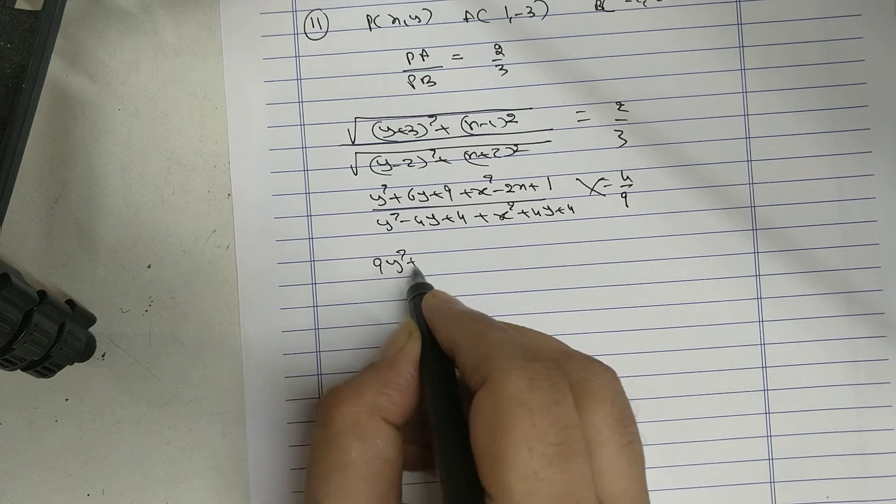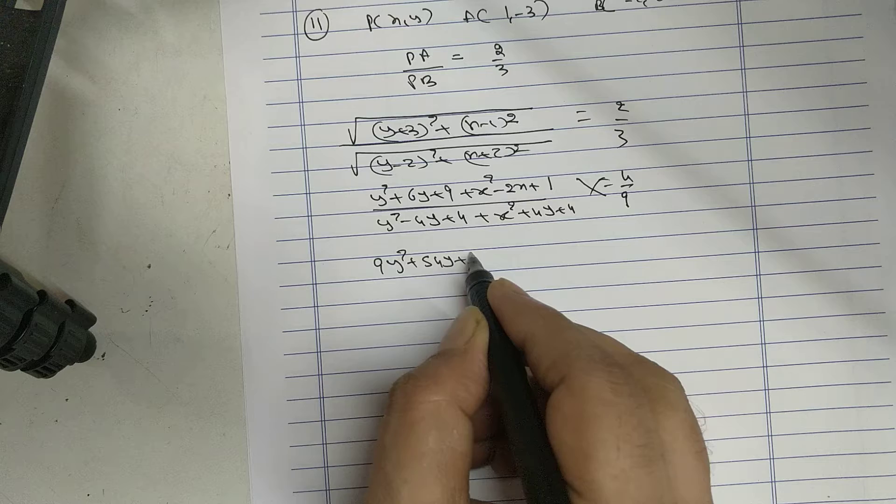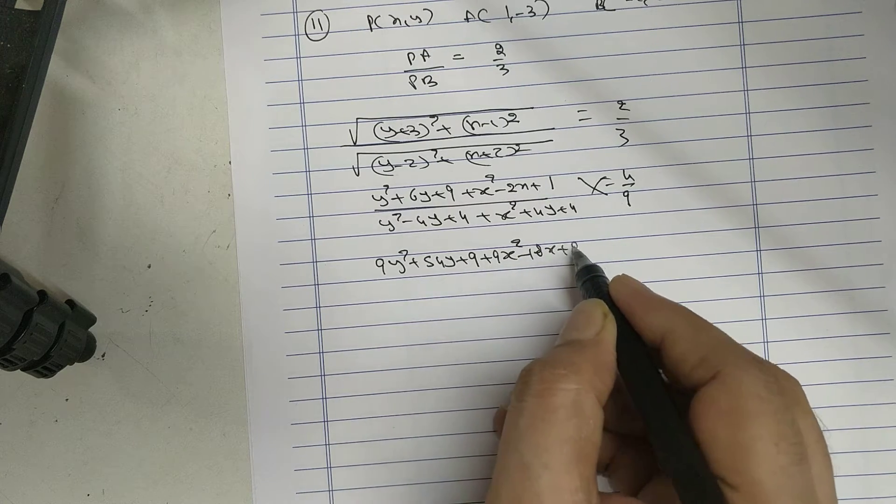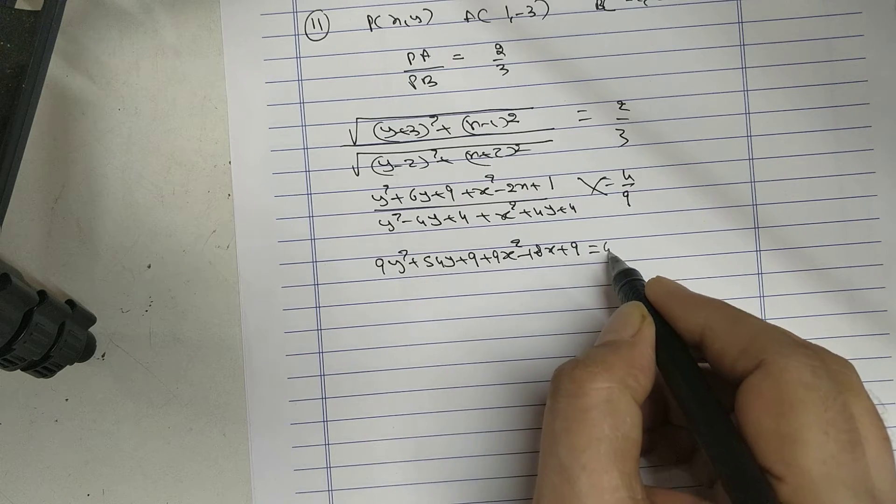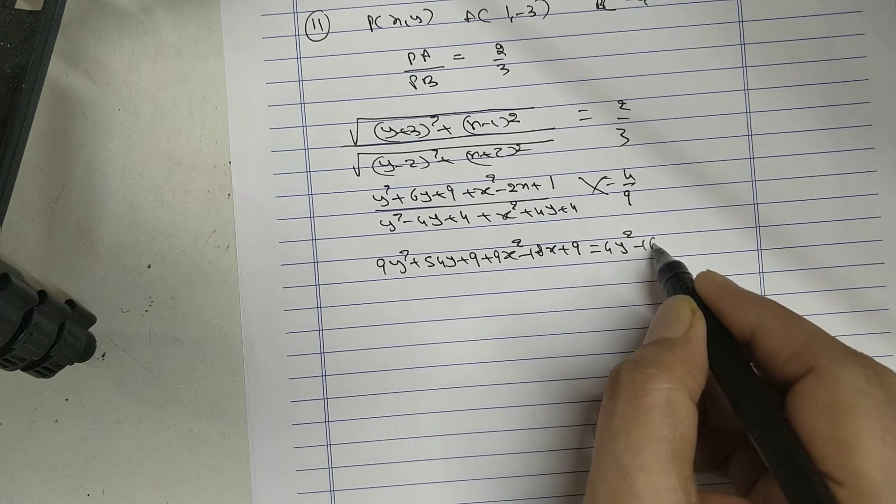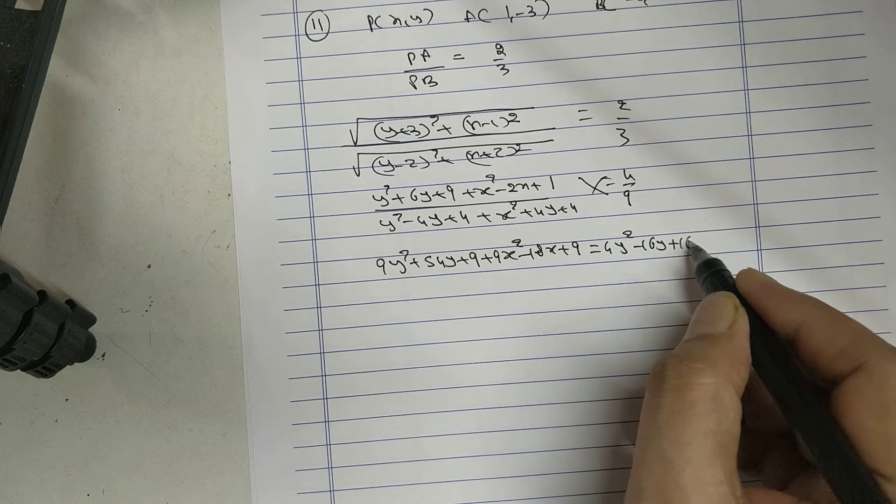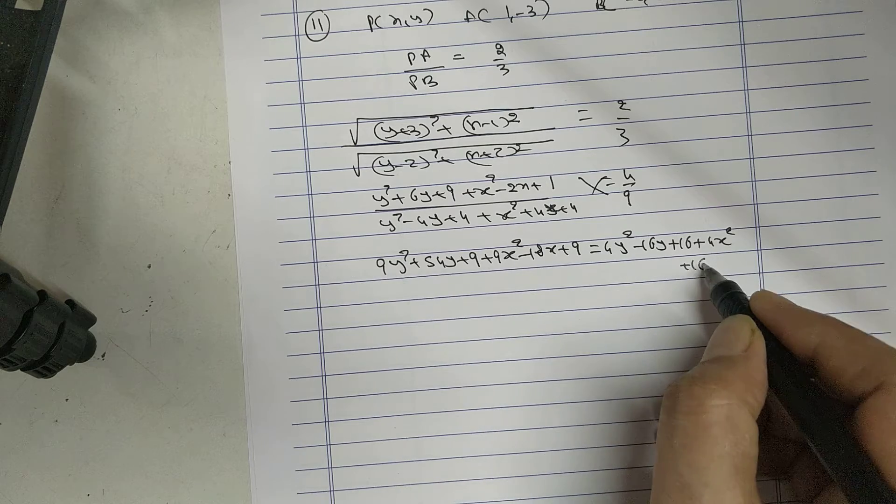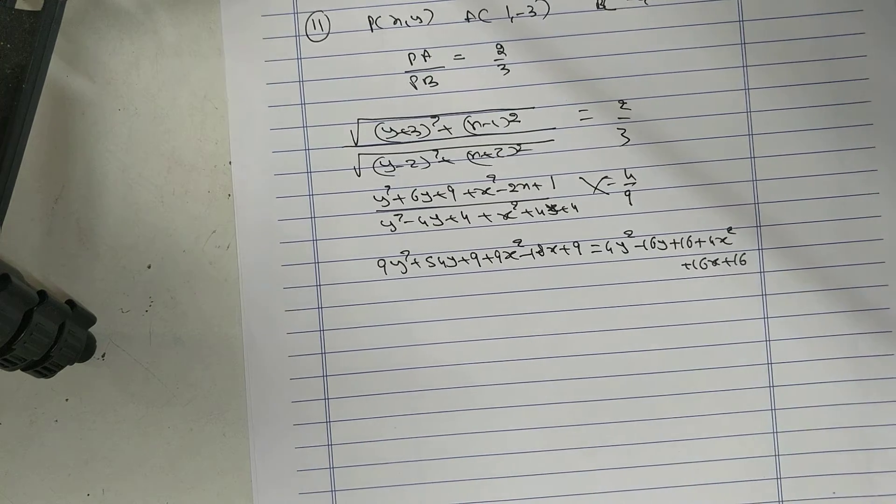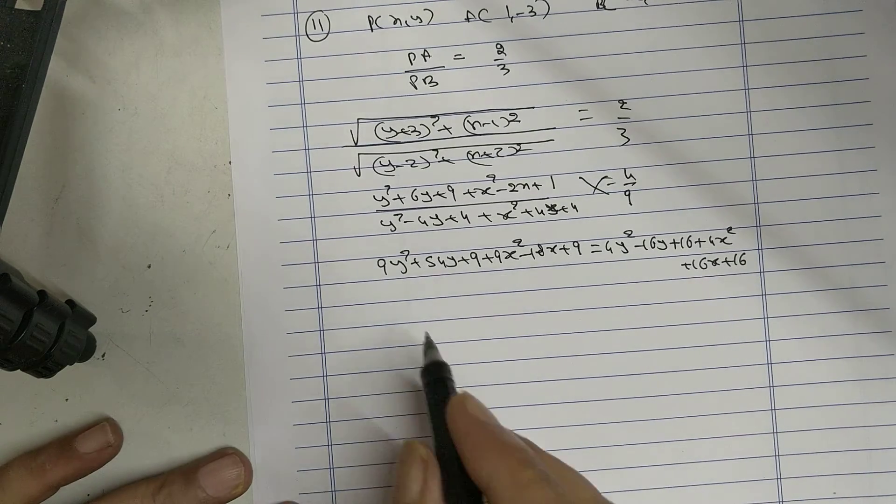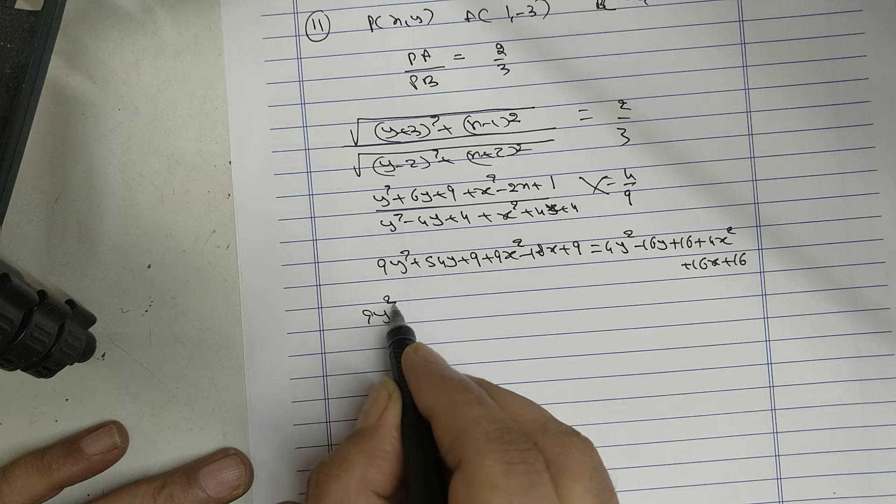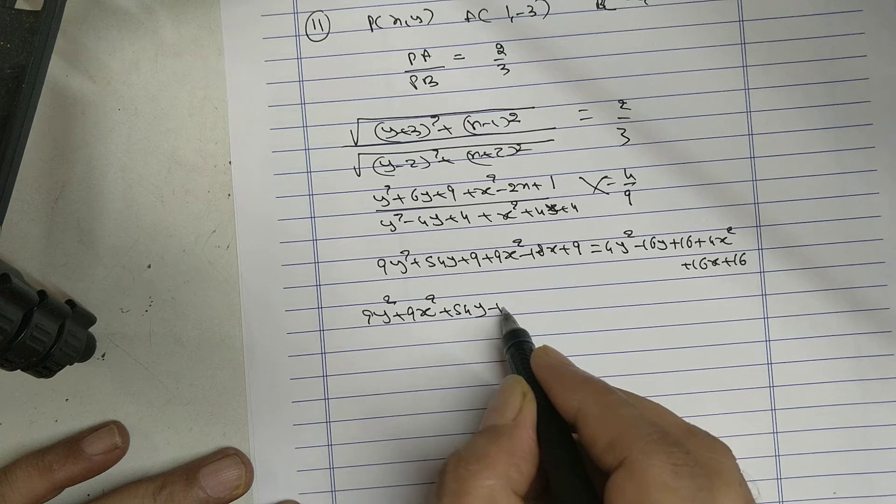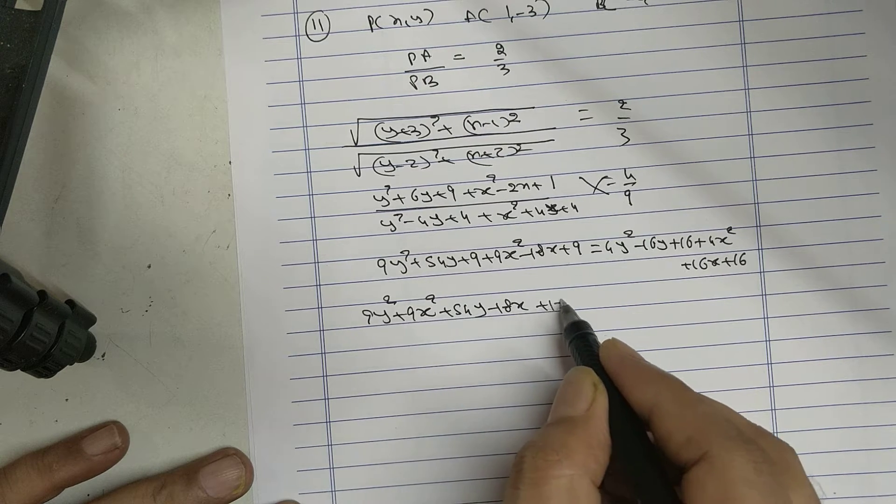9Y square, 54Y plus 9, 9X square, minus 18X plus 9. 4Y square minus 16Y plus 16, 4X square plus 16X plus 16. See that 9Y square plus 9X square plus 54Y minus 18X plus 18.